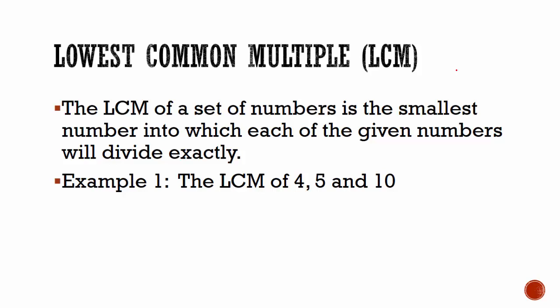Theoretically, to do this you can list all the multiples of all the numbers given and then look to see which ones are common and then find the smallest of it. But there is a shortcut. So if we want to find the LCM of 4, 5, and 10, we write it out like this and we divide by prime numbers.